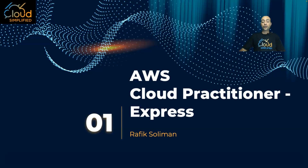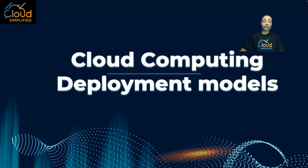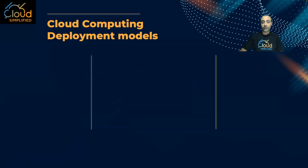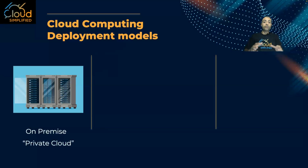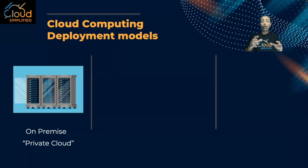We're going to start with the first part, and in the first part we'll be talking about the different cloud computing deployment models. The first one is what we call on-premise, and another name for on-premise is what we call private cloud. In the private cloud, this means that you have your physical data center and all your applications and workloads are running from the physical resources inside this data center.